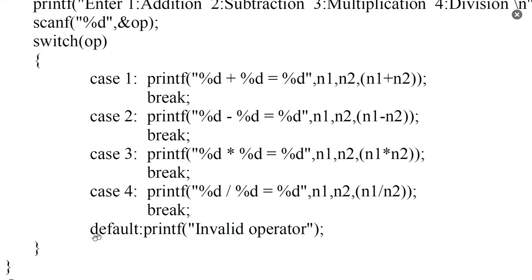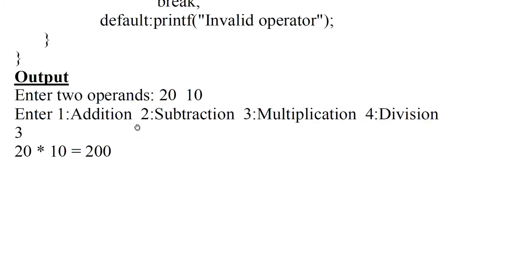If none of the valid options are entered, the default case executes and displays invalid operator. Suppose the two operands are 20 and 10, and the option entered is 3 for multiplication. So it displays 20 into 10 is equal to 200.